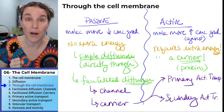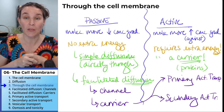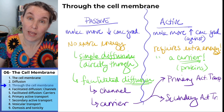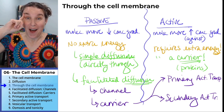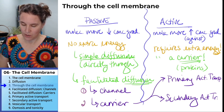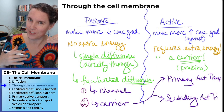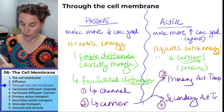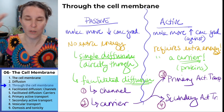Not all passive transport requires a carrier protein. Facilitated diffusion can use a carrier or it can use a channel, and simple diffusion doesn't need anybody — I don't need any help to get through the cell membrane if the thing is small or lipophilic. We're going to talk about channels, carriers for facilitated diffusion, and carriers for both primary and secondary active transport — four topics that this framework is going to frame for us.